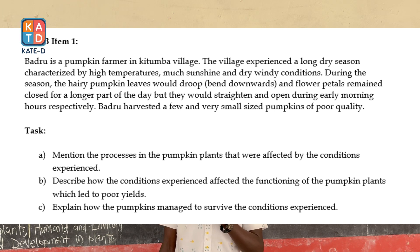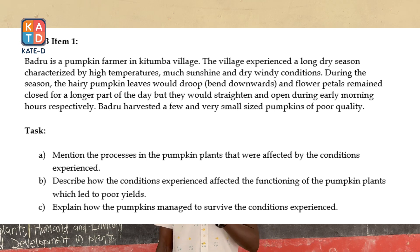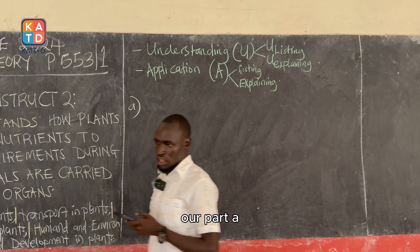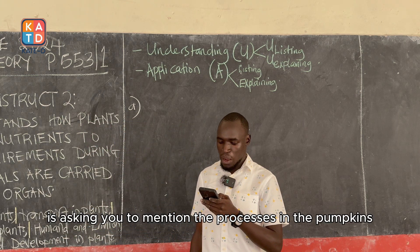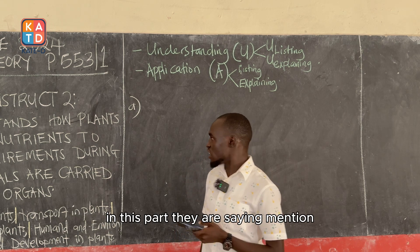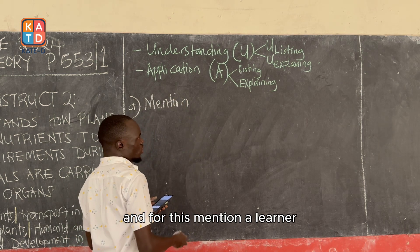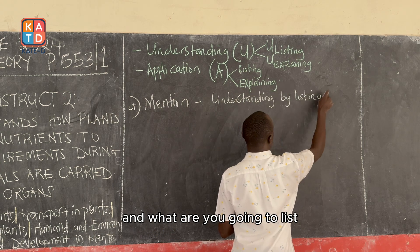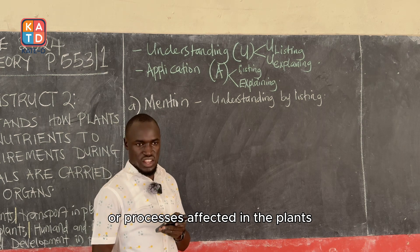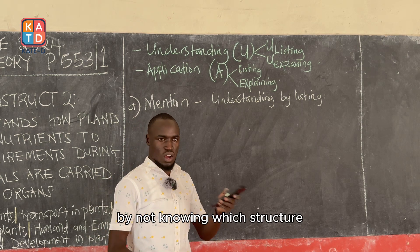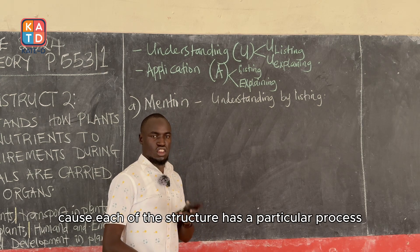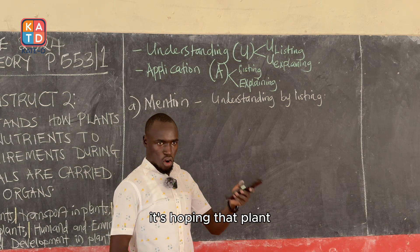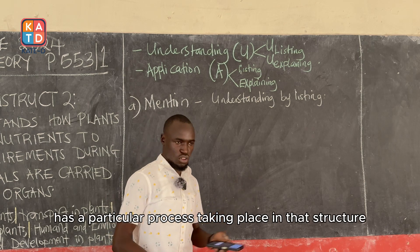Task Part A: Mention the processes in the pumpkin plants that were affected by the conditions experienced. Part A is asking you to mention — they are simply saying mention. A learner will show their knowledge of understanding biology by simply listing. You cannot give a process without knowing which structure was affected in that plant, because each structure has a particular process taking place in it.